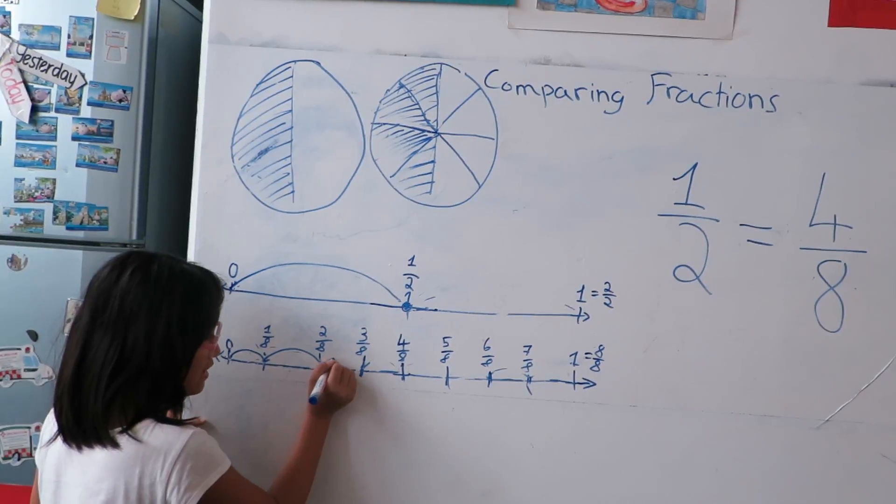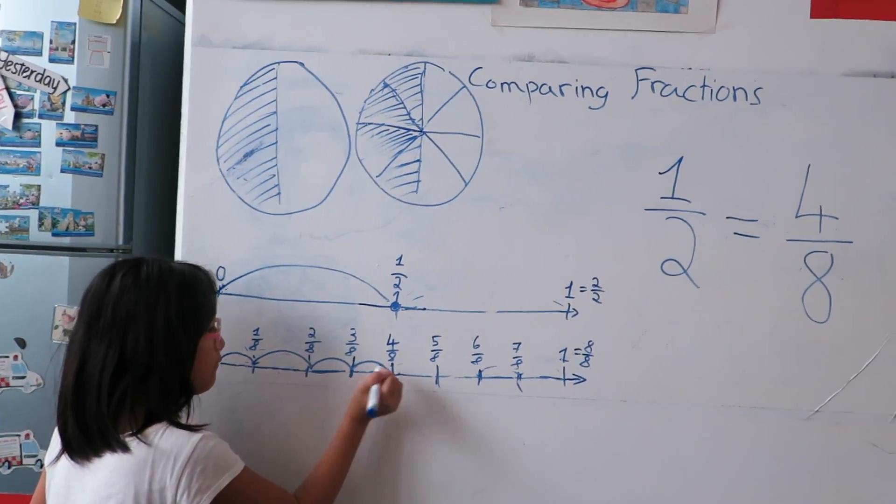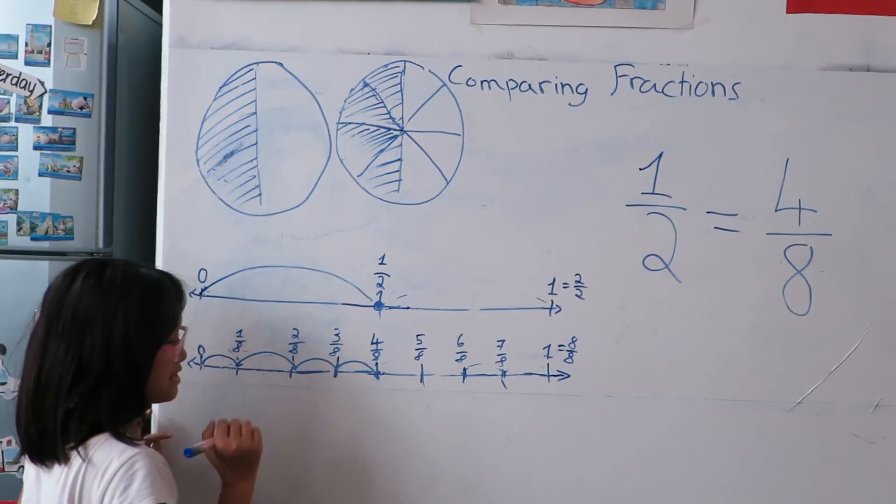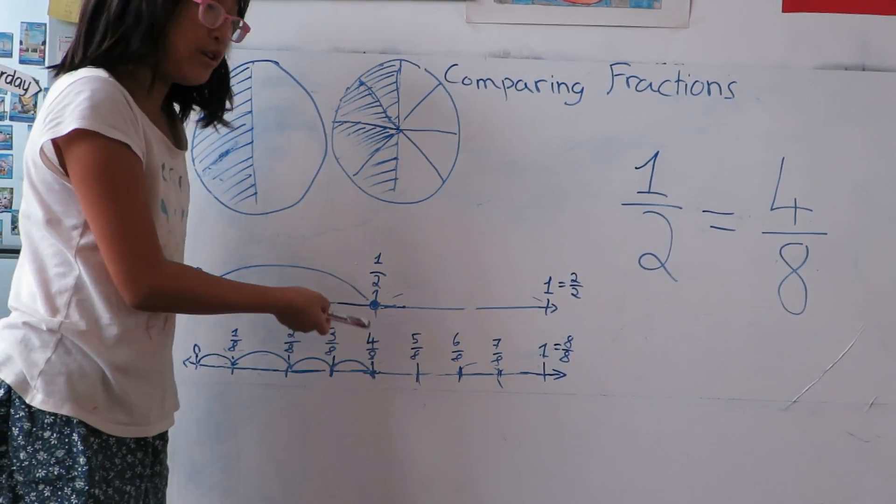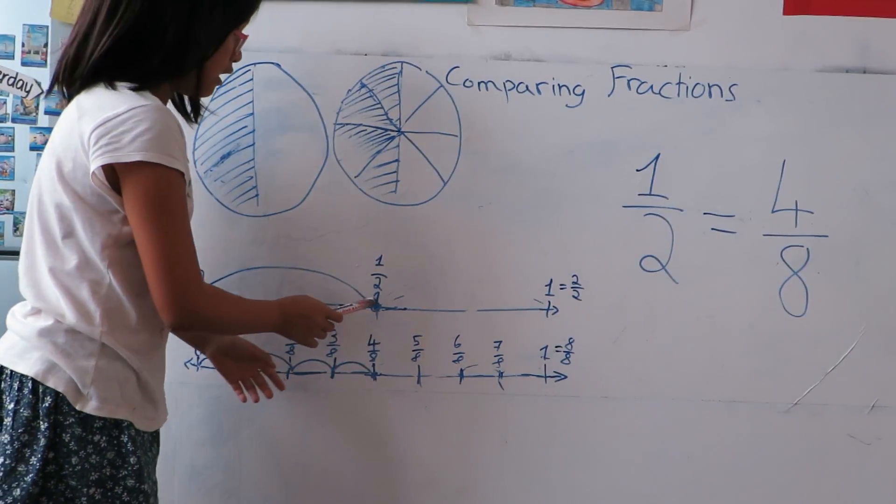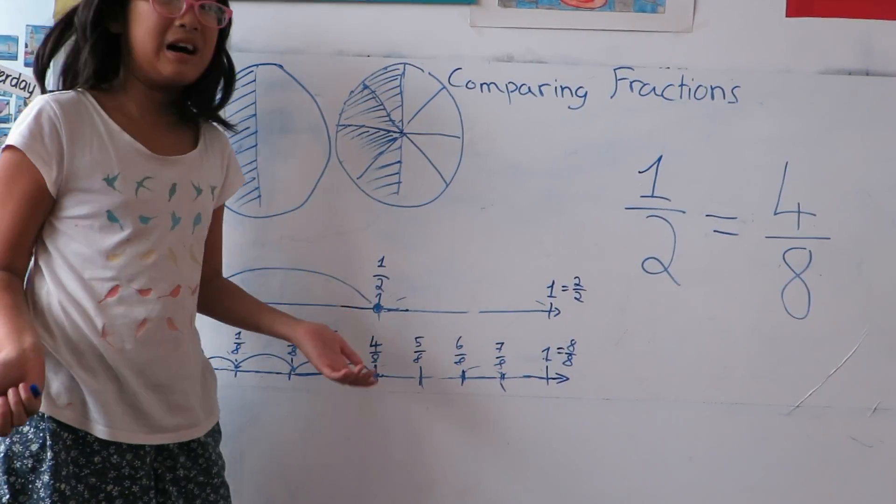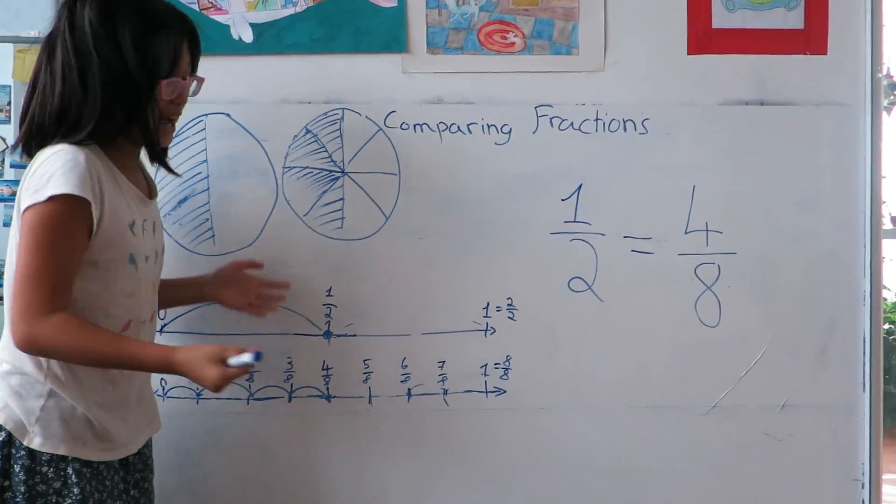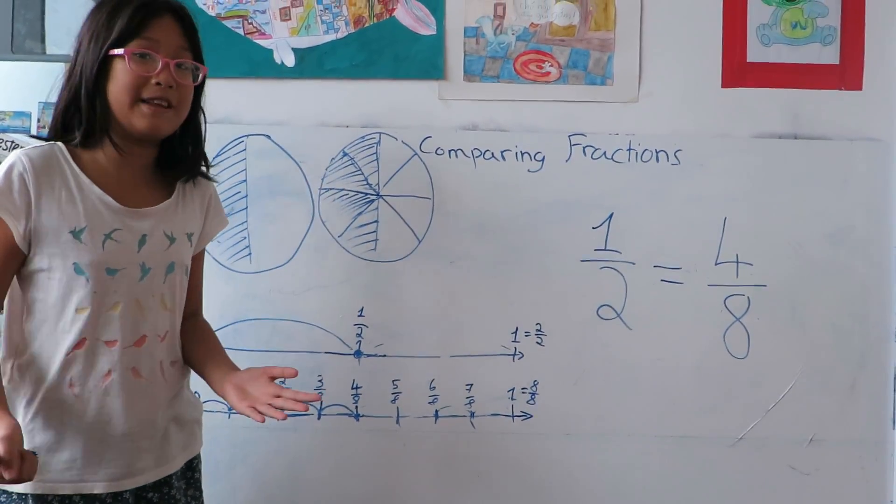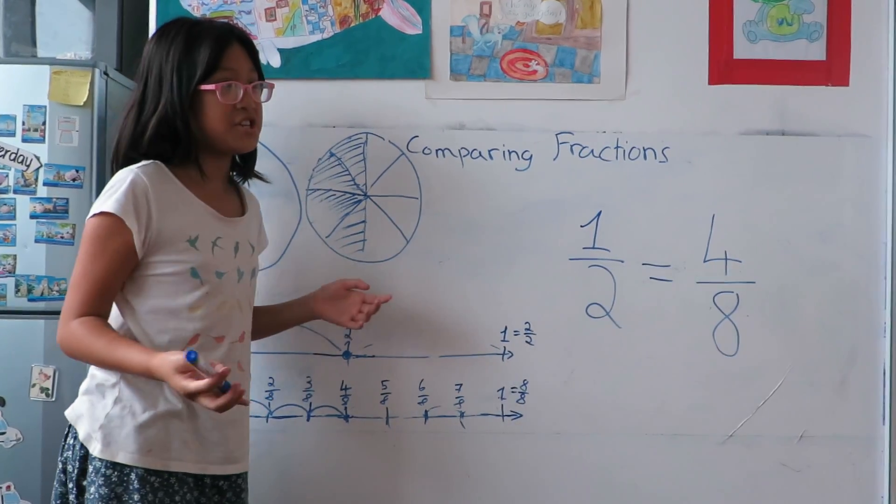One eighth, two eighths, three eighths, four eighths. Four eighths is over here. And you see, these two fractions line up. So that means they are equivalent.